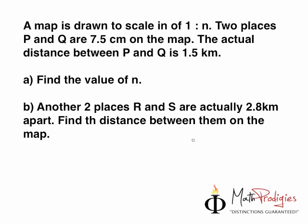Okay, so how do we do this question? It's actually pretty simple. The map is drawn to scale 1 is to n. That's the first information you're given. Now, two places P and Q are 7.5 cm on the map, and the actual distance between P and Q is actually 1.5 kilometers.